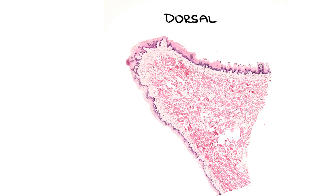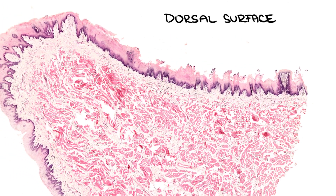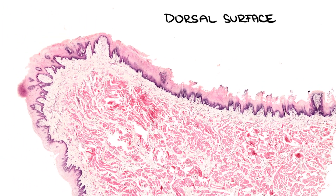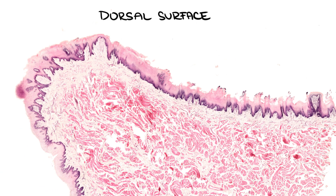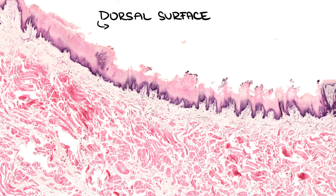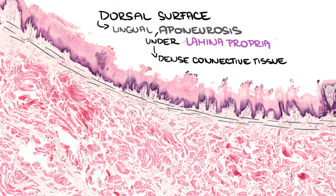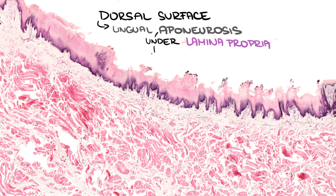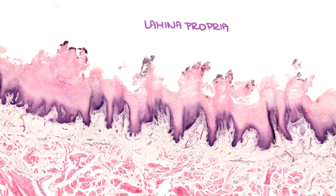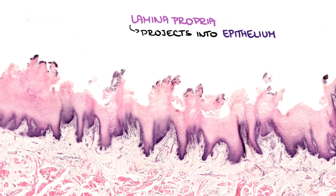The tongue's dorsal surface is quite different from its ventral portion. There is a lingual aponeurosis under the lamina propria, which is a layer of dense connective tissue that anchors the lingual muscles. The lamina propria projects into the epithelium and forms high papillae which are visible on its surface.